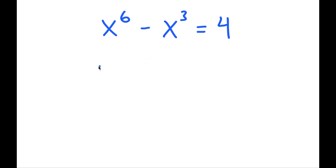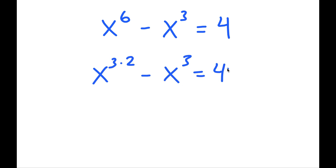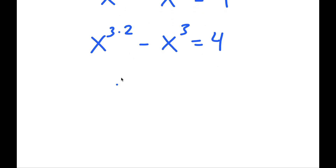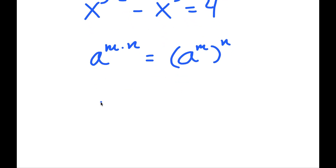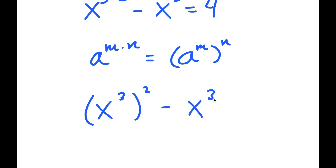To solve this, I'm going to rewrite this as x to the power of 3 times 2 minus x to the power of 3 equals 4. And if I have something in the form a to the power of m times n, this is equal to a to the power of m to the power of n. So x to the power of 3 times 2 turns out to x to the power of 3 to the power of 2, minus x to the power of 3, is equal to 4.